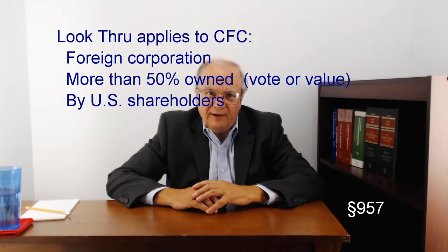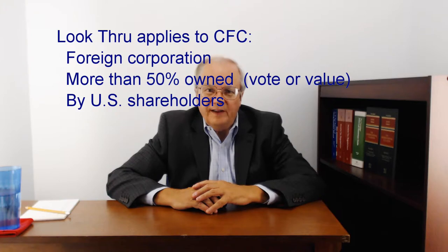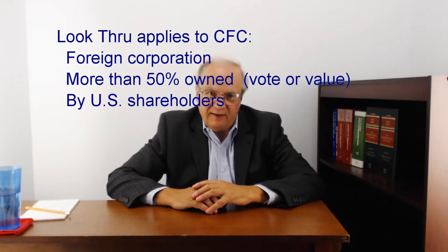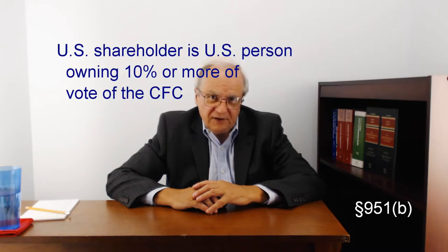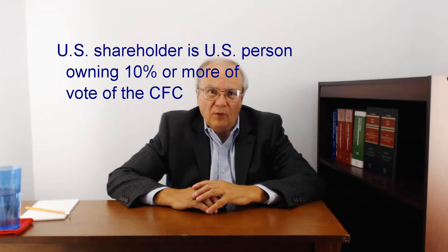Before we proceed, let's go through a quick definition of the two magic phrases. A controlled foreign corporation — the first magic phrase — is any foreign entity treated as a corporation for U.S. tax purposes if that foreign entity is more than 50% owned by vote or value by U.S. shareholders. A U.S. shareholder — the second magic phrase — is any U.S. person who owns 10% or more of the vote of that foreign entity.